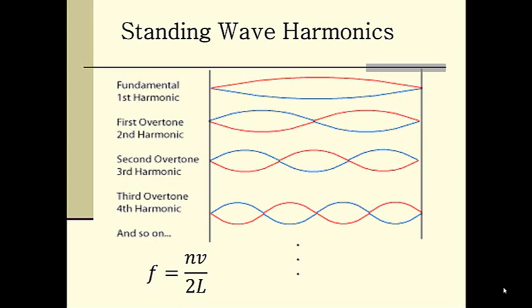Look at the equation at the bottom of your screen. Frequency equals NV divided by 2L. Frequency is equal to N, the number of anti-nodes, multiplied by V, the wave speed, divided by 2 times L, or the length of the string.